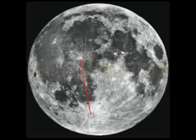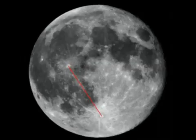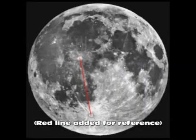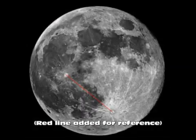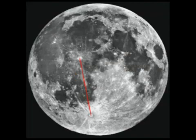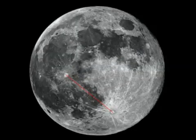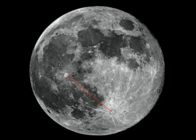In this video we're going to look at the claims made in many YouTube videos that the moon has strangely tilted or rotated on its axis in a way that it should not be. This is explained quite simply when we consider that the moon rises in the east, travels across the sky, and sets in the west. In the northern hemisphere the moon will cross over in the southern sky, and in the southern hemisphere the moon will cross over in the northern sky.